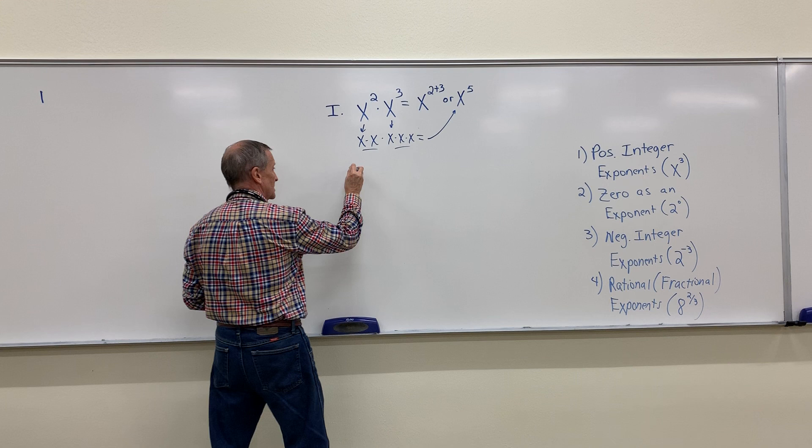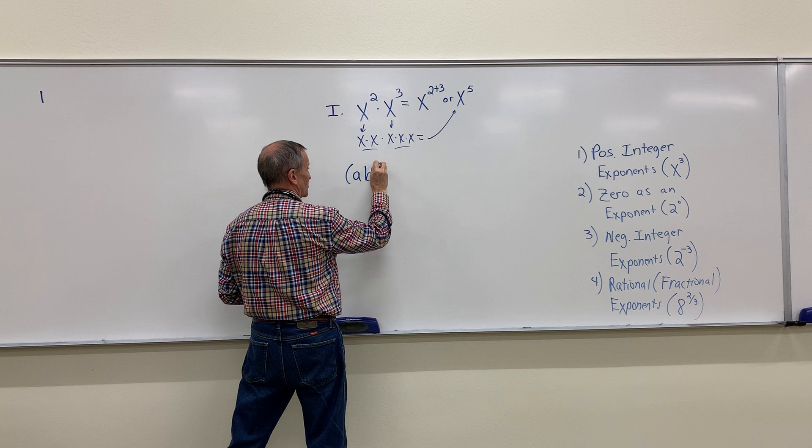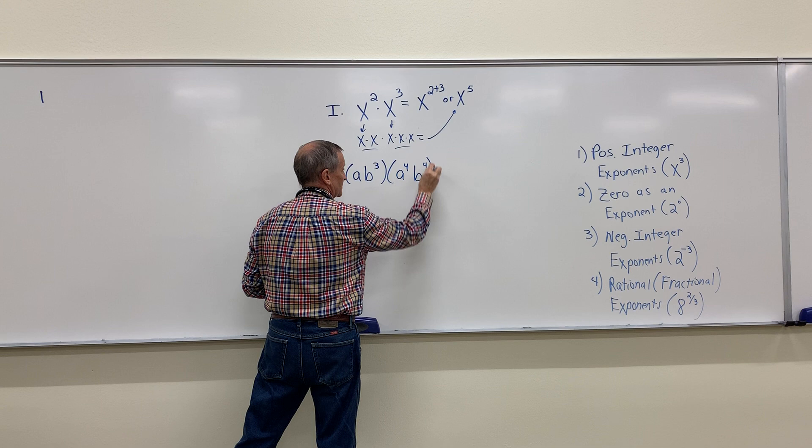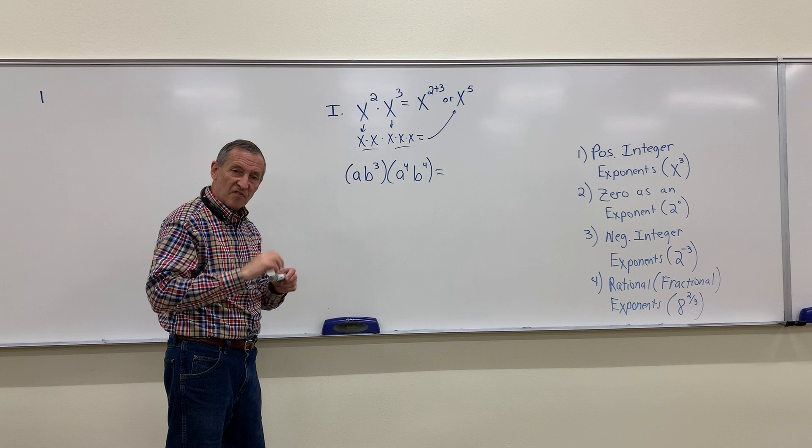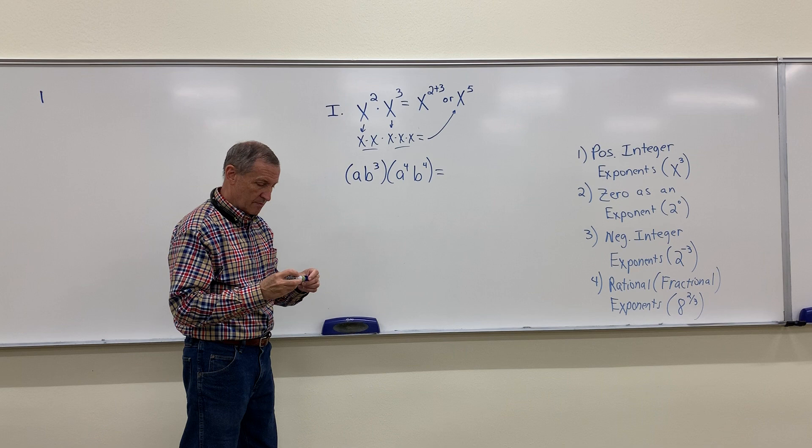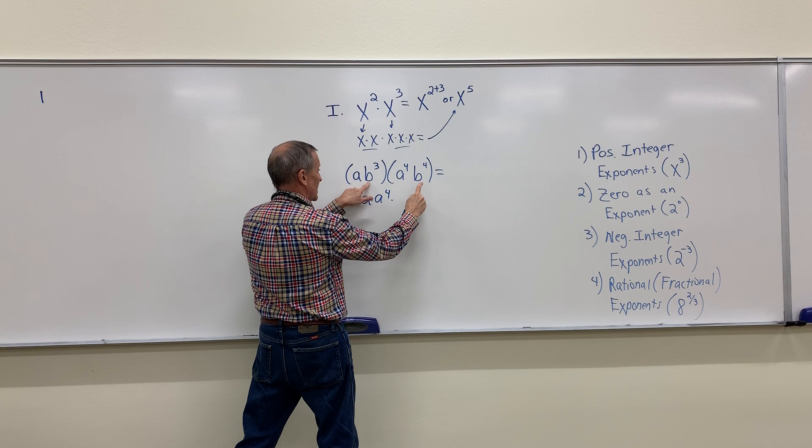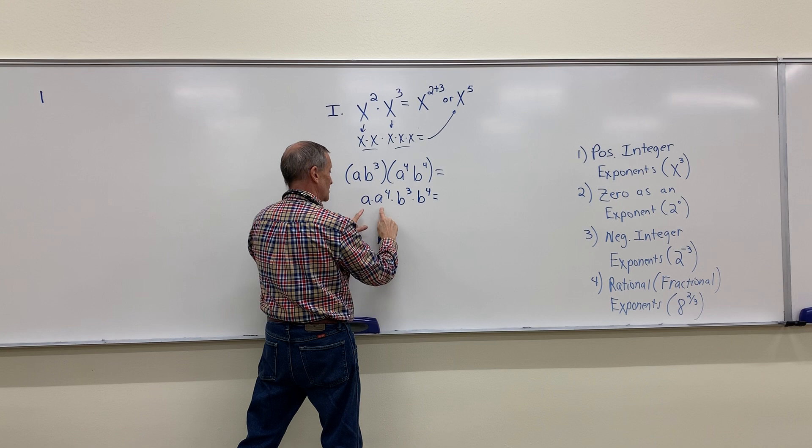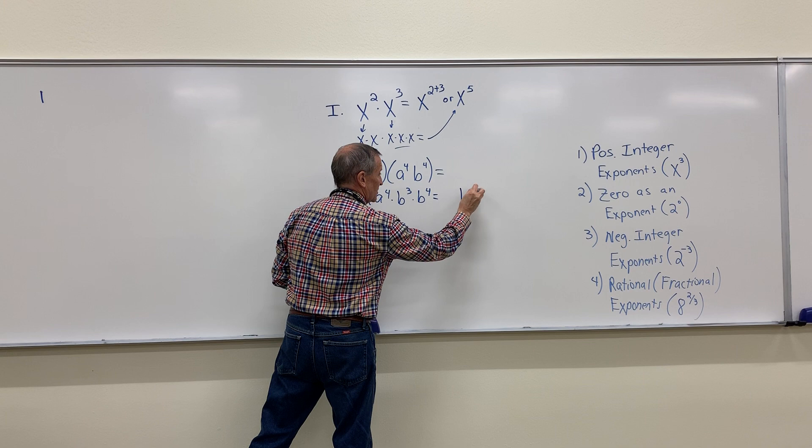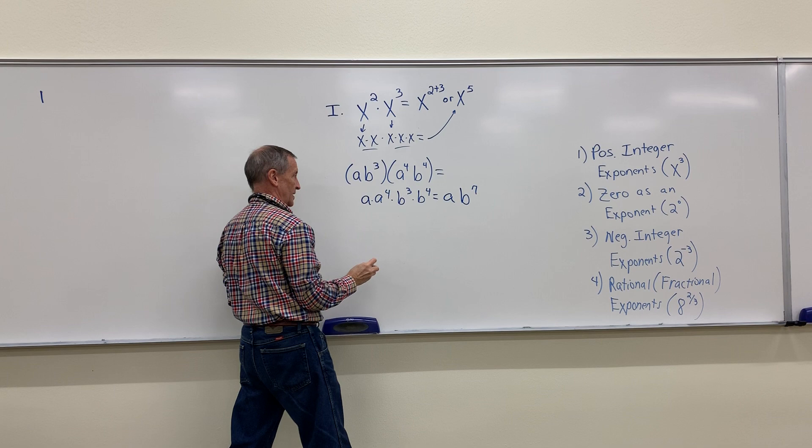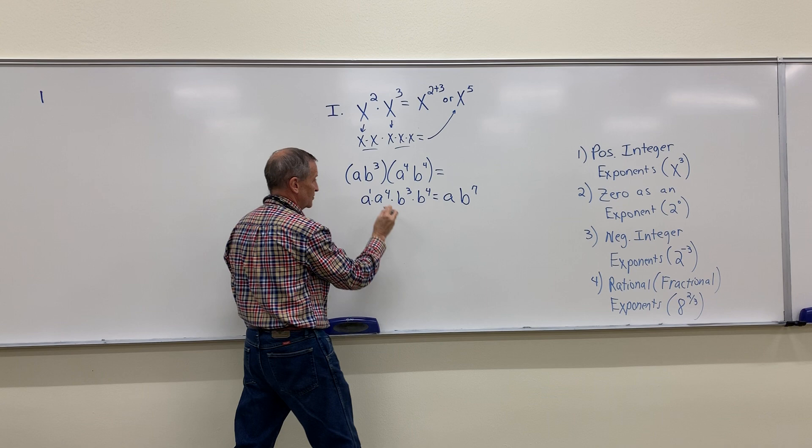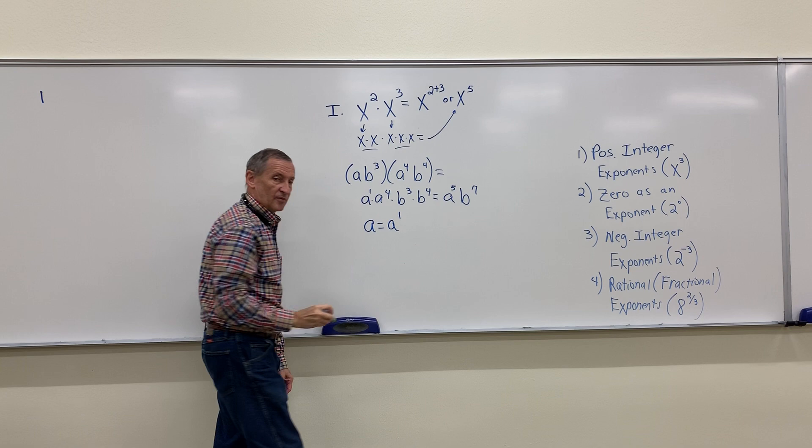It deals with factors that have the same base. Notice this. I can have more than one variable in these expressions. And you're probably aware that I can move factors around, change the order of things that I'm multiplying when I'm multiplying. That's called the commutative property. And so I can think of this as A times A⁴. I can think of it in essence as two different problems. This one and that one. Three and four obviously be the seventh. A to the what? That's right. There's an understood one there. So one plus four is five.